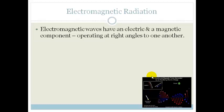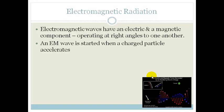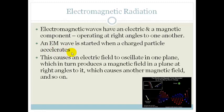Electromagnetic waves have an electric and a magnetic component operating at right angles to one another. That's why they're called electromagnetic radiation. What happens is we have a charged particle and it accelerates, and when it accelerates it causes an electric field to oscillate in one plane, which in turn produces a magnetic field, and so on and so on.